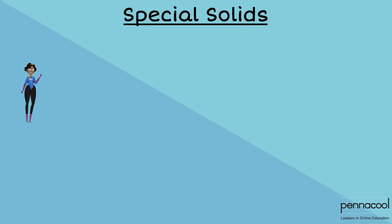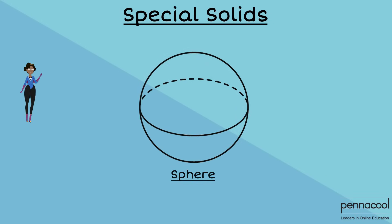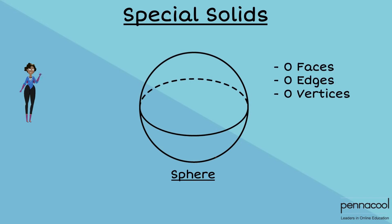There are some solids where it may be hard to classify edges and vertices. These are solids that have curved surfaces. A sphere has no edges, no faces, and no vertices — it is a continuous curved surface.